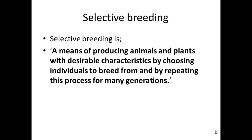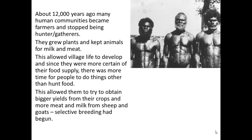Selective breeding sits against natural selection. It is artificial selection because it is mankind — men and women — who are making these decisions and choosing which individuals breed with which to make organisms with desirable characteristics.